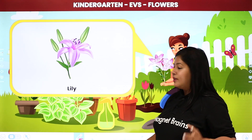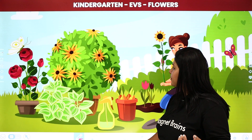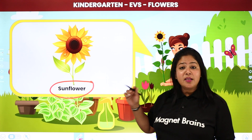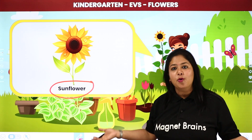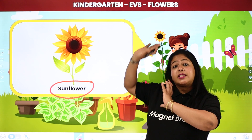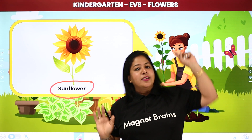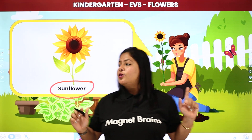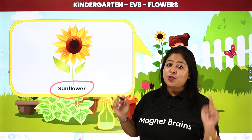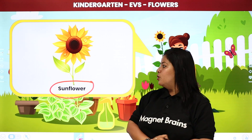Lisa, aur bhi flowers hain kya aapke garden mein? Yes, bol rahi hain — ek aur flower hai. Toh chaliye dekhte hain kaun sa flower hai Lisa ki garden mein — sunflower! So student, sunflower. What is the meaning of sun? Suraj. Aur flower means phool. Toh hum isse bolenge suraj mukhi. Hum isse sunflower kyun bolte hain? Kyunki jahan pe bhi sun ka face hota hai, wahi pe is flower ka face hota hai. Sunflower always faces the sun. Aur isliye isko suraj mukhi ka phool bolte hain. Bahut bade bade flower hote hain, chhote bhi hote hain.